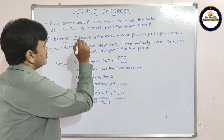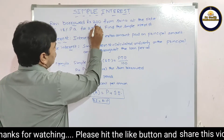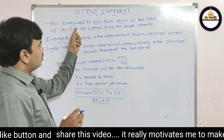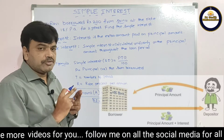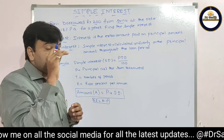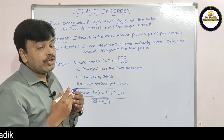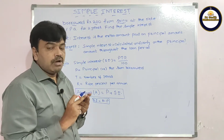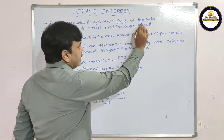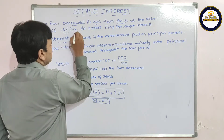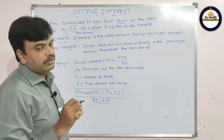Let us see the concept of simple interest through an example. Ravi borrowed rupees 200 from Srinu. We can assume a bank, post office, or any other organization in place of Srinu — that means Ravi can take a loan from a bank, post office, any other organization, or any person. The rate is 18% per annum for two years. Find the simple interest.